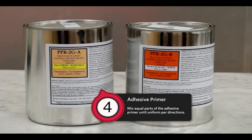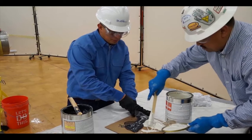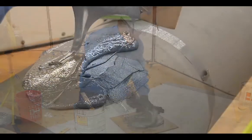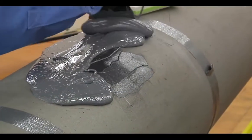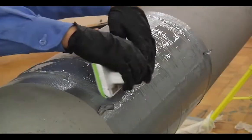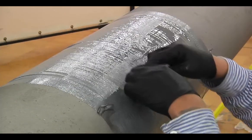Adhesive Primer: Mix equal parts of the adhesive primer until uniform, per directions. Apply the primer to the pipe surface, ensuring an approximate 30 mm coverage. Allow the primer to sit until a peanut butter thickness is achieved.